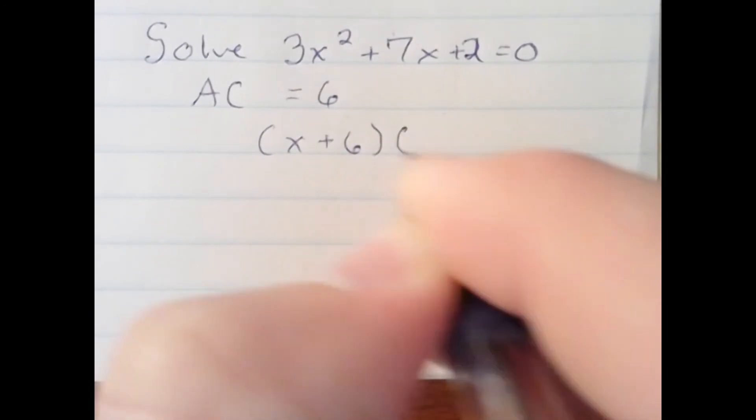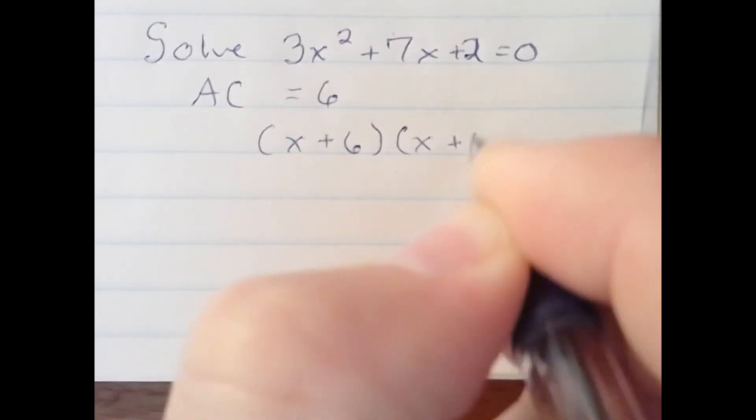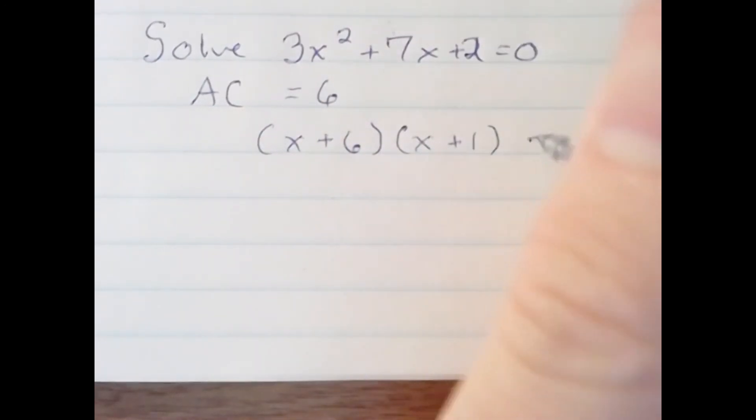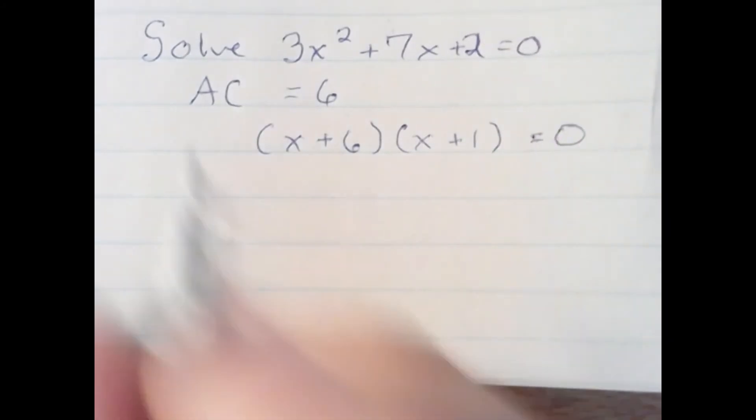6 and 1 accomplish that. That is not our factored form. We still have to account for the A number, which is 3.